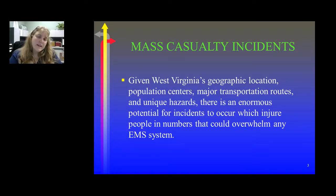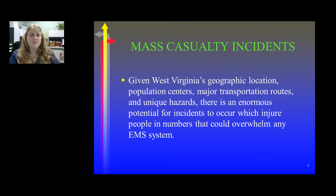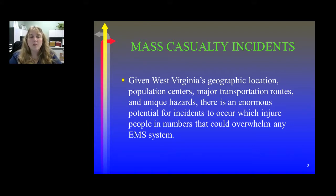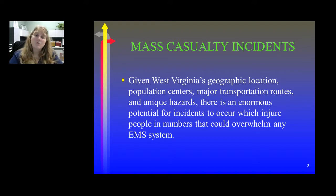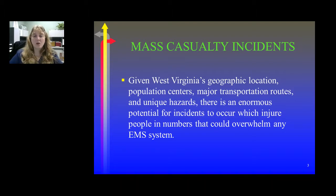A mass casualty incident — when we understand West Virginia's geographic locations, our population centers, transportation routes, and any unique hazards — there's an enormous potential for incidents to occur which could injure a number of people and overwhelm any EMS system, whether it's West Virginia or New York City. Remember that just because we are West Virginia does not mean that a mass casualty incident cannot occur.